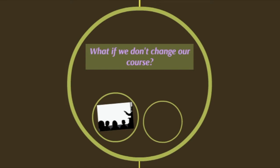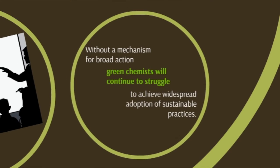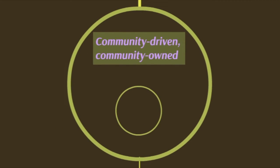By now, you might be asking yourself, what will happen if we do not change our course? The answer to that question is that continuing to teach chemists the way we always have will perpetuate the grand sustainability challenges we face, while non-renewable resource extraction increasingly jeopardizes human welfare and the environment. Moreover, without a mechanism for broad action, green chemists will continue to struggle to achieve widespread adoption of more sustainable practices.